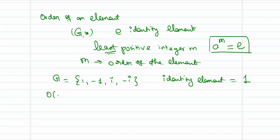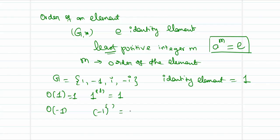What is the order of the element 1? 1 raised to the power of 1 is 1, so the order of 1 is 1. What is the order of -1? (-1)² = 1, so the order of -1 is equal to 2.